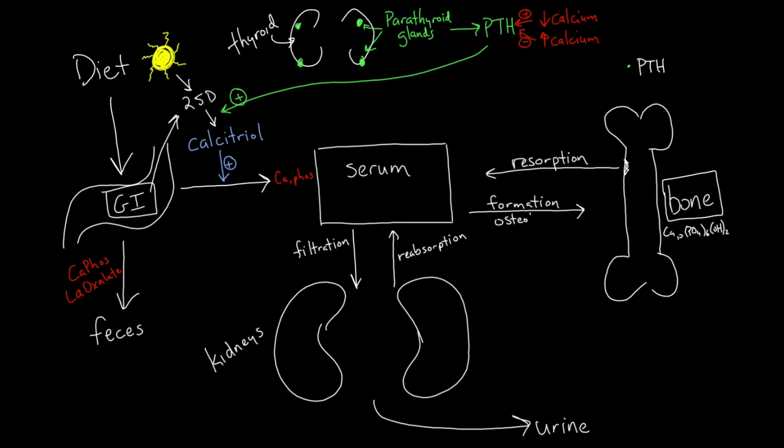Recall the function of osteoblasts, which utilize calcium and phosphorus to build bone in the process called formation, and osteoclasts, the cells of resorption, which destroy bone and create calcium. I purposely stress the B in blasts and the C in clasts so that you can remember their function in bone turnover.